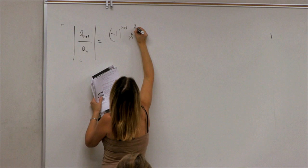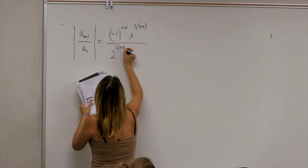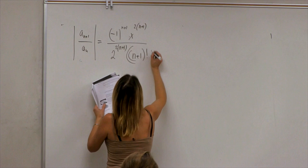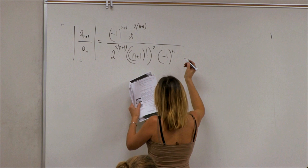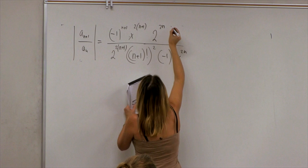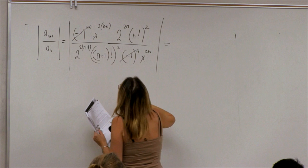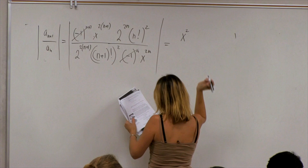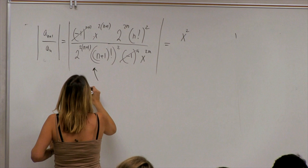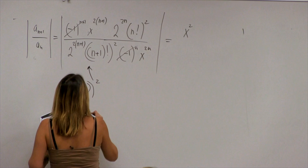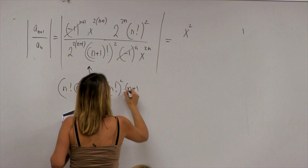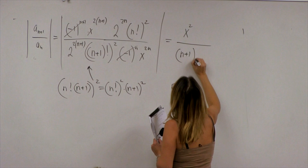We have: (−1)^(n+1) · x^(2n+2) / (2^(2n+2) · ((n+1)!)²) divided by (−1)^n · x^(2n) / (2^(2n) · (n!)²). Taking absolute values gets rid of the (−1). We get x^(2n+2)/x^(2n) = x², and 2^(2n)/2^(2n+2) = 1/4. For the factorials: (n+1)! = n! · (n+1), so ((n+1)!)² = (n!)² · (n+1)², and the (n!)² cancels, leaving (n+1)².